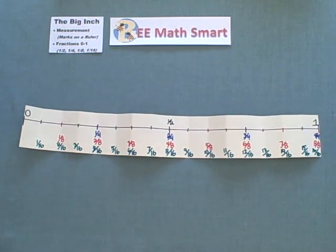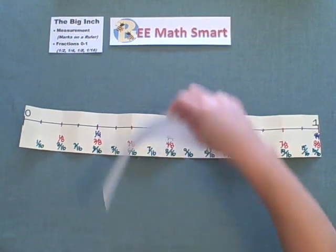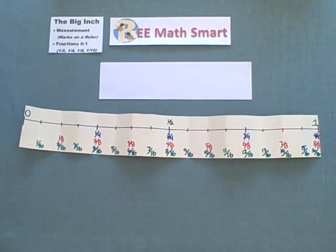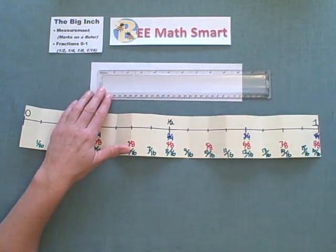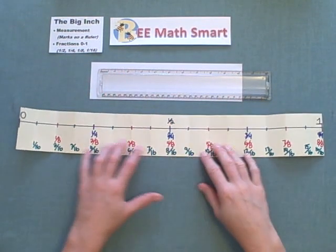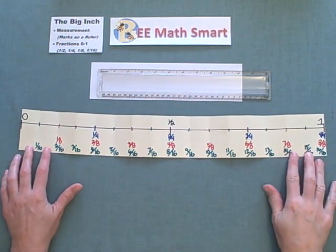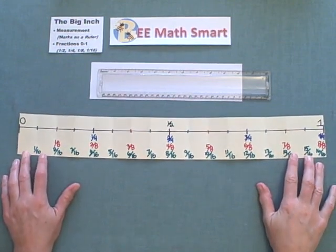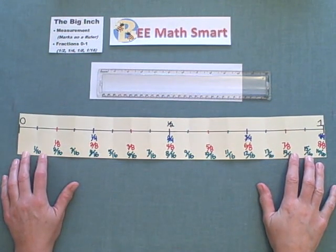So today we have reviewed not only the marks on a typical school ruler, and I'm going to put my ruler back up here, that go from zero to one, but we've also talked about fractions and equivalent fractions. I hope you got something from my BeMathSmart video today and have a good day.